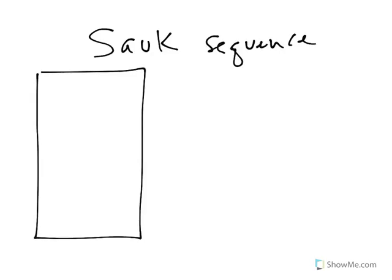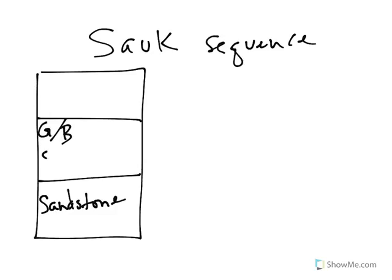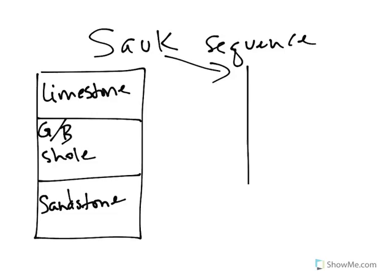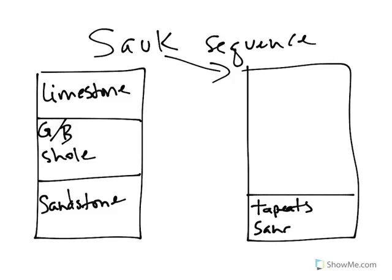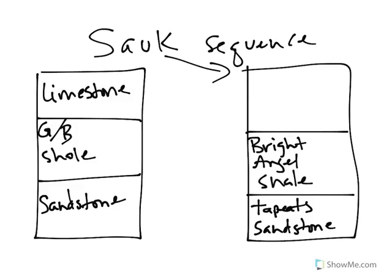We just figured out that all transgressive sequences should look like this — we should see sandstone, then green or brown shale, and then limestone. Well, if we look at the sock sequence itself, lo and behold, the bottom is called the Tapeats sandstone. Then we should expect to see a shale next, and we do — we have the Bright Angel shale. And then we should expect to see a limestone, and we do — we have the Muav limestone.